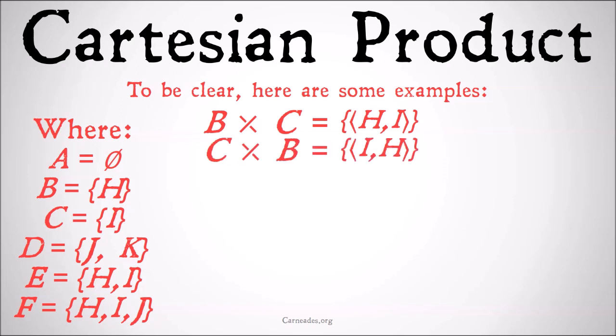The Cartesian product C times B is just that flipped. As we proved in an earlier video, those are importantly different as long as H and I don't equal each other. So that's just the class of the ordered pair I, H, because I is the only member of C and H is the only member of B. So order does matter for Cartesian products, unlike it does for arithmetic products.